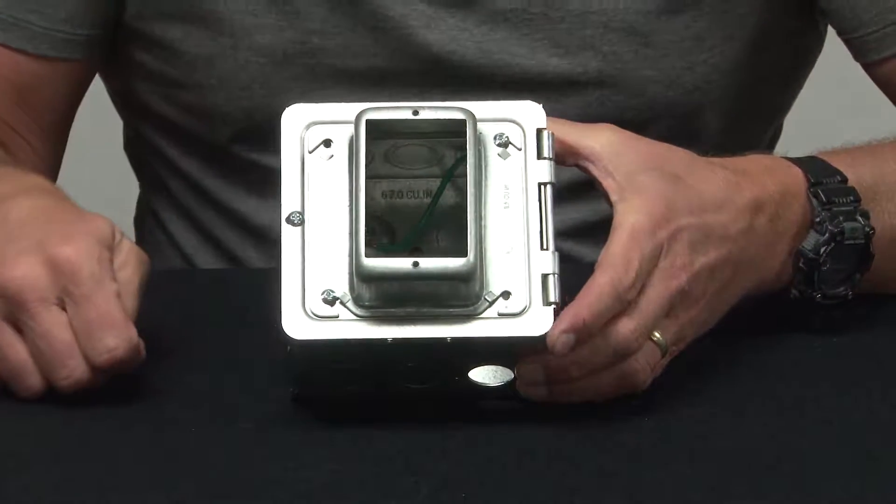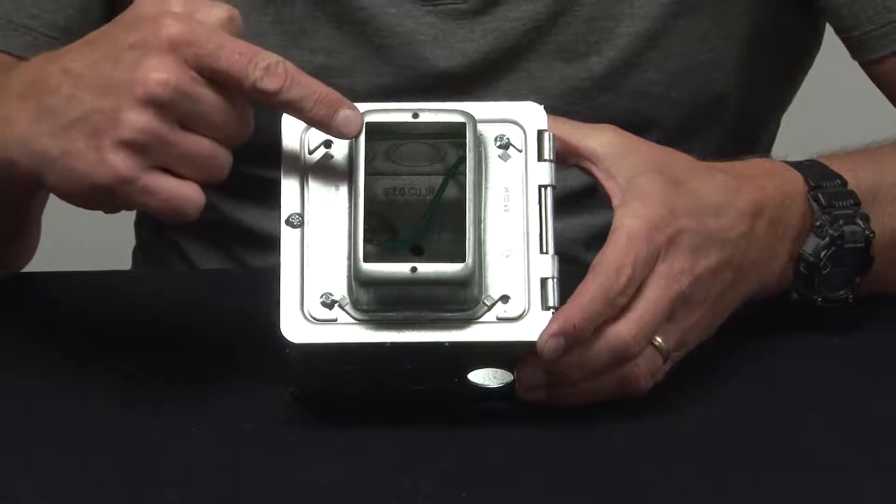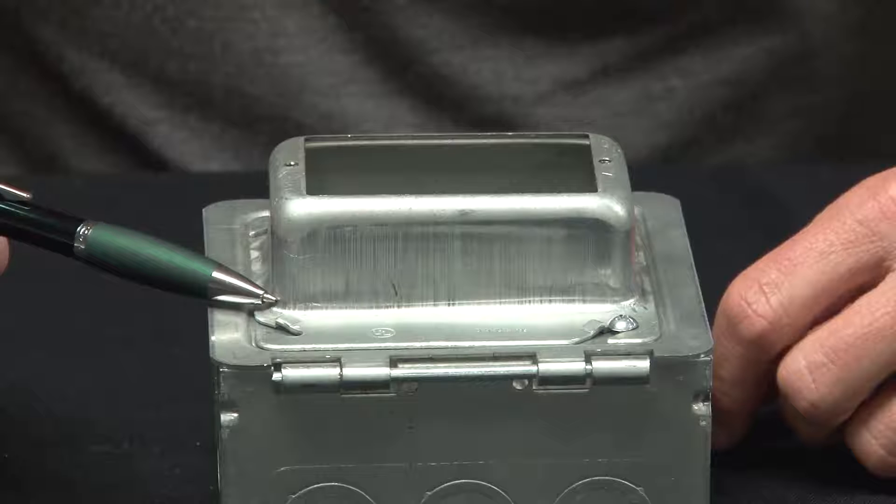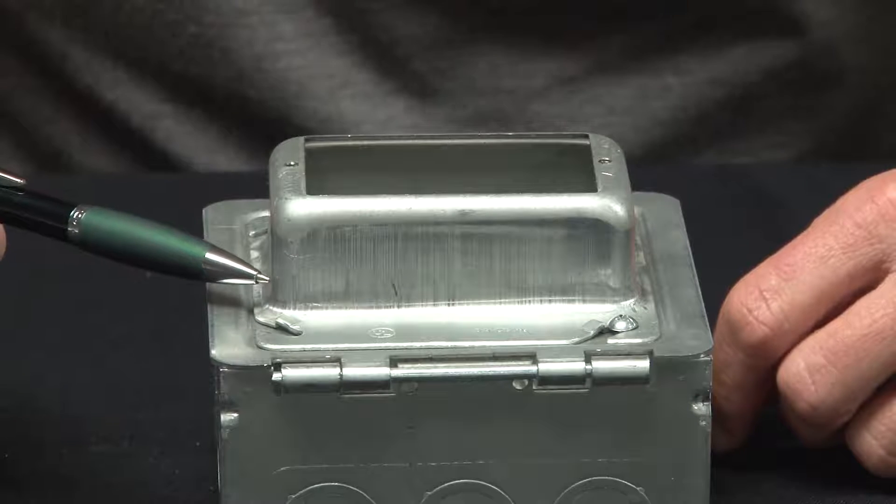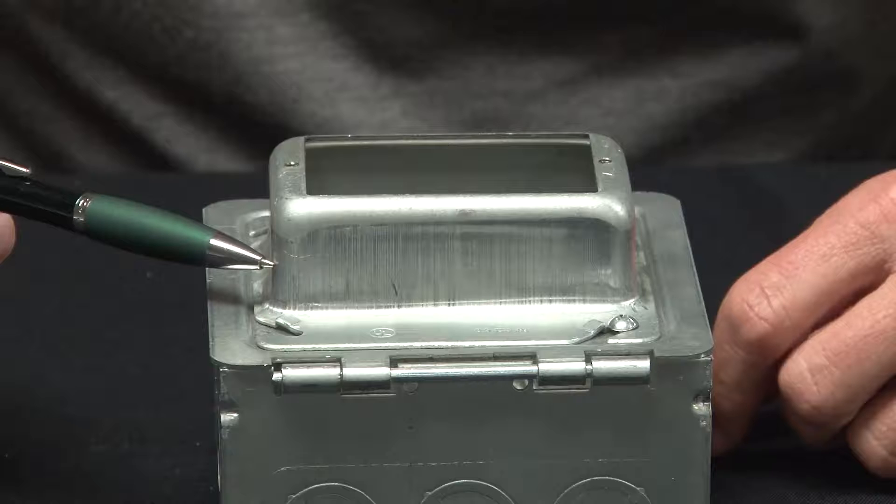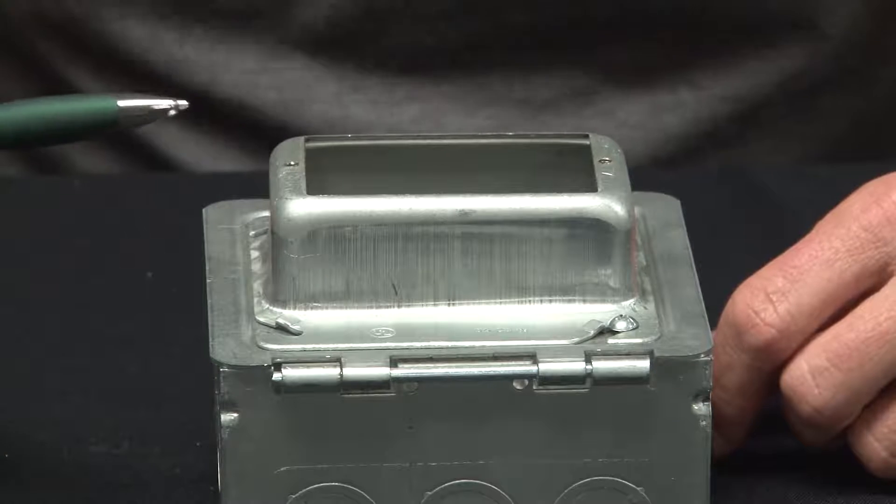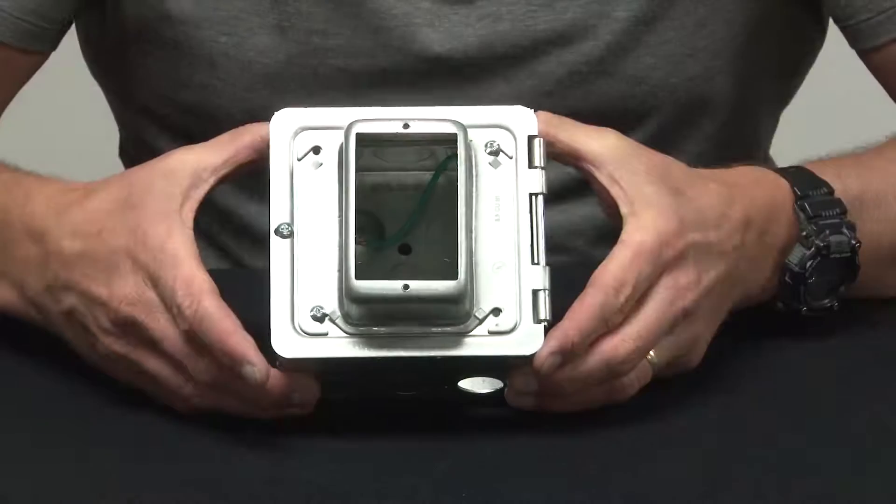The box comes with a pre-installed one-gang device ring that is raised half-inch, five-eighths, three-quarter, one inch, inch and a quarter, inch and a half, or two inches for tile, drywall, or plaster.